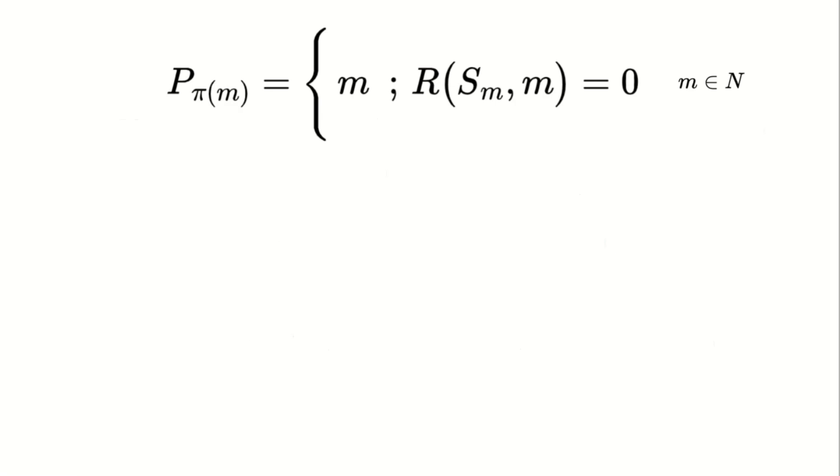Chapter number four, the general formula of prime numbers. Now the moment we've all been waiting for, the general formula for prime numbers. I'm about to present the formula that allows you to input a number and find the corresponding prime number. The formula is as follows: P_π(m) = {m : R(S_m, m) = 0}, where m is any natural number.